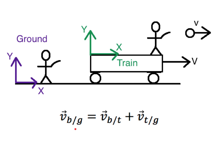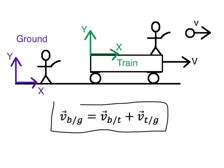The velocity of the ball measured from the ground equals the velocity of the ball measured from the train plus the velocity of the train relative to the ground. This equation is what you need to be able to come up with. The velocity of the ball relative to the ground is the velocity of the ball relative to the moving coordinate system plus the velocity of the moving coordinate system. If you can write this equation and know what all its parts mean, you can use it to solve any relative velocity problem.